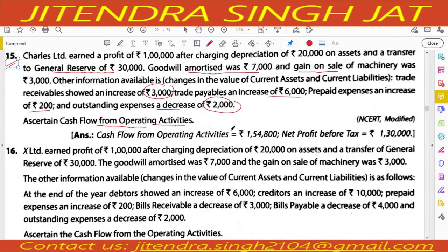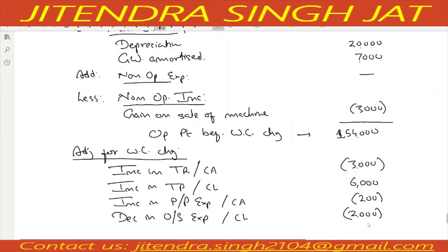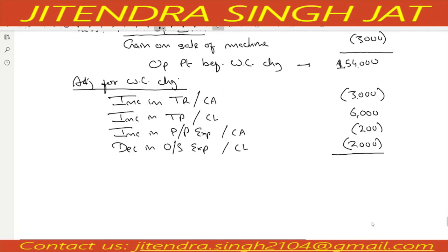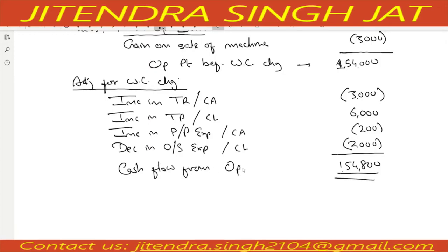All points are over. Let's do the total: 1,54,000 minus 3,000 plus 6,000 minus 200 minus 2,000 equals Rs. 1,54,800. This is your cash flow from operating activities.